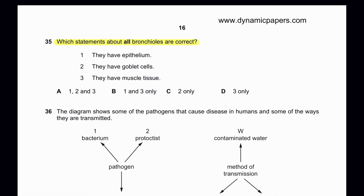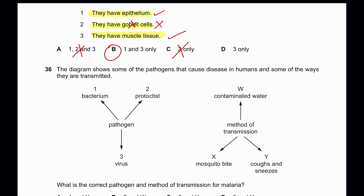Question 35: Which statements about all bronchioles are correct? Bronchioles have epithelium cells — definitely correct. Bronchioles do not have goblet cells — only bronchi and trachea have goblet cells, so option 2 is wrong, eliminating C and A. Since option 1 is correct, option 3 must also be correct: bronchioles have muscle tissue, which contracts during breathing difficulty and in response to dangerous chemicals. So the answer includes options 1 and 3.